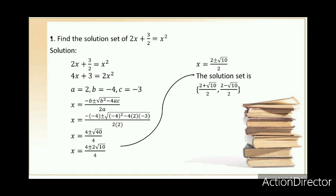And the final answer will be x equals 2 plus and minus the square root of 10 over 2. The solution set is 2 plus square root of 10 over 2, and 2 minus square root of 10 over 2.